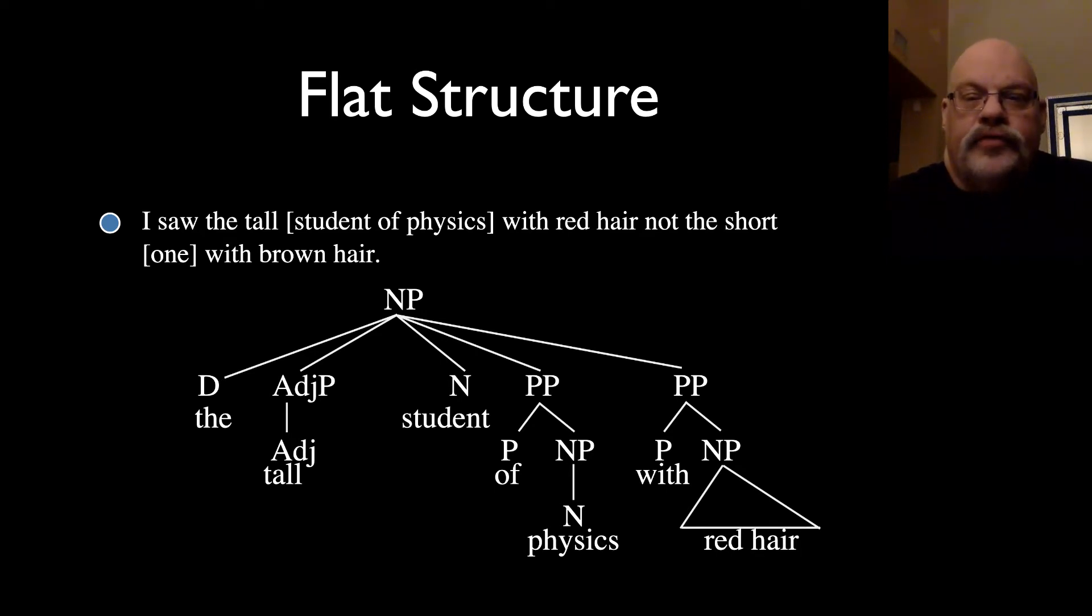Now, if you look at this tree, this is not predicted by this tree, because what we're doing is we're identifying student of physics, but that is not a constituent in our tree. It does not form a single unit. But the constituency test of one replacement suggests it should be. So when we're replacing a student of physics with one, we're identifying student of physics as a constituent, which is not represented in this tree.